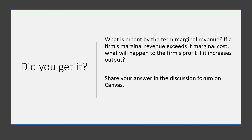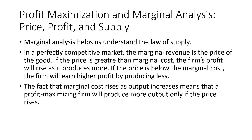Marginal analysis helps us understand the logic behind the firm's supply curve. Marginal cost is the cost of producing another unit, and marginal revenue is the revenue gained from selling another unit. In a perfectly competitive market, marginal revenue equals the price of the good. If the price is greater than marginal cost, the firm's profit will rise as it produces more. If the price is below marginal cost, the firm earns higher profit by producing less. Because marginal cost rises as output increases, a profit-maximizing firm will produce more only if the price rises — this explains the law of supply.